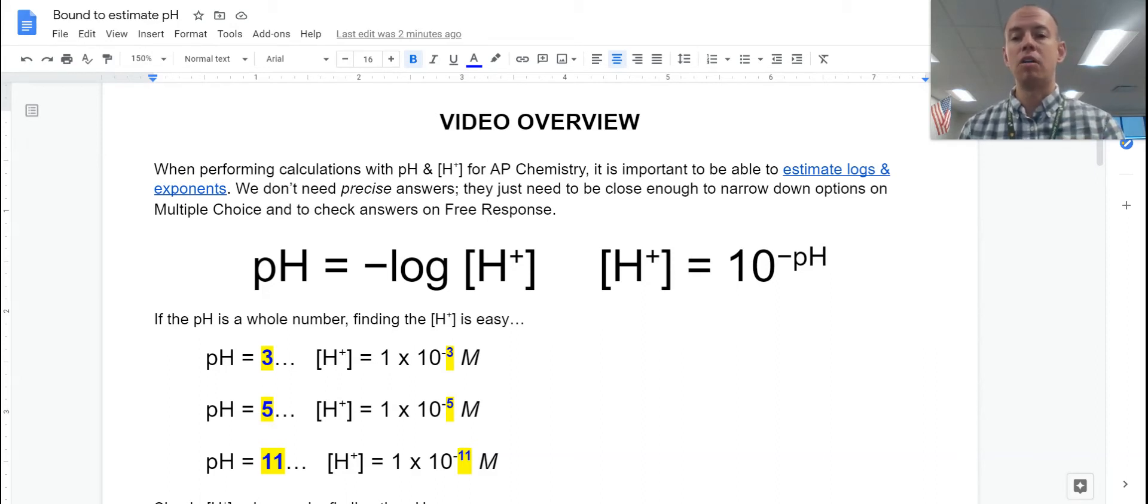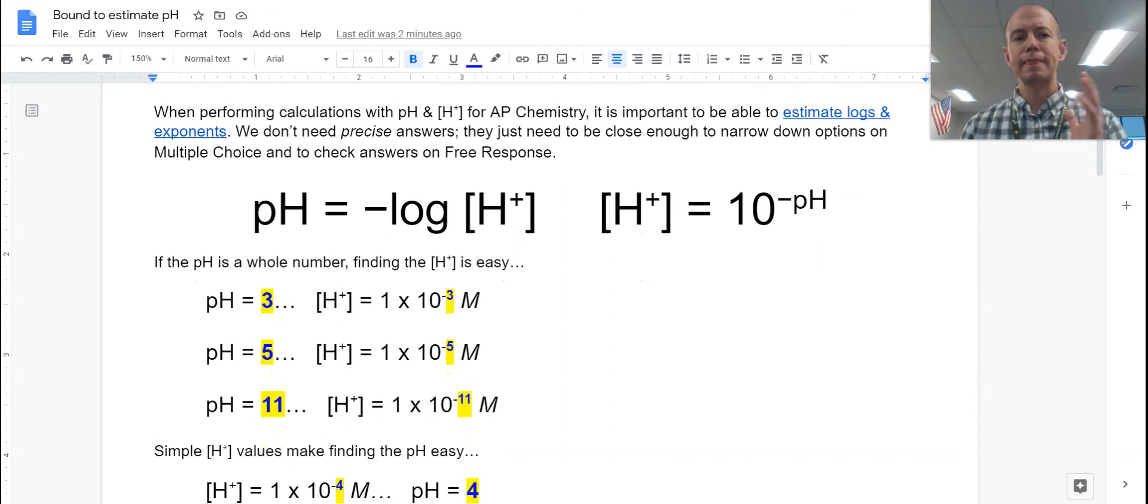The idea of a log or log base 10 is what we default to here, is that it's more or less undoing an exponent. So this link right here takes you to Wikipedia and it's got all the right definitions on mantissa and all of these different terms that maybe your math teachers know that we don't really need to know. What we need to know is if we're doing negative logs and exponents here, it's really simple when we have easy numbers or when we think about the whole number of what pH means.